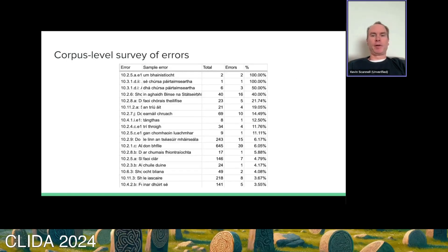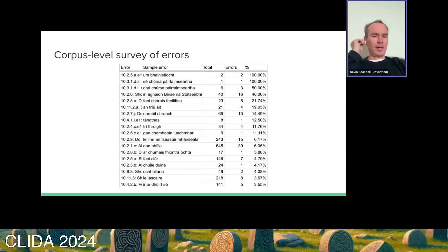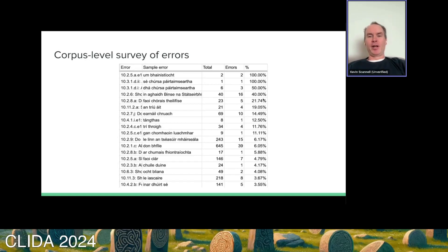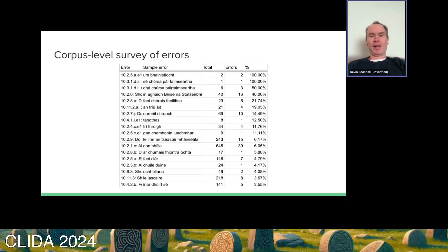Here's the corpus-level survey of errors. On the first column are the actual sections of the standard expressed as constraints in my system. I've given sample errors of the appropriate type and then the percent of the time in the corpus where speakers used or did not follow the advice of the standard. Some were because the rules are more or less obscure, and others are legitimate mistakes that you see people make online.